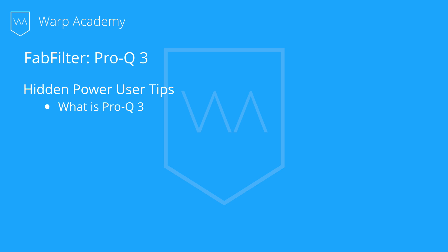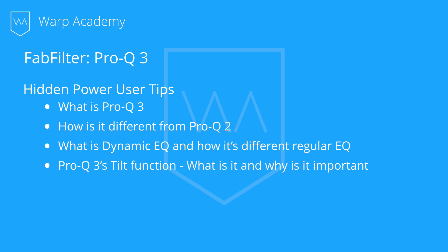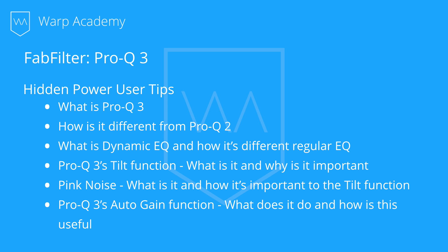We're going to talk about what is Pro-Q3 and how is it different from Pro-Q2, their previous release. We're going to get into what is dynamic EQ and how it's different than regular EQ. We're going to talk about Pro-Q3's tilt function, what it is, why it's important. We're going to talk about pink noise and how that's important to the tilt function. And then we're going to wrap it up by talking about Pro-Q3's auto gain function, what that does and how it's useful.